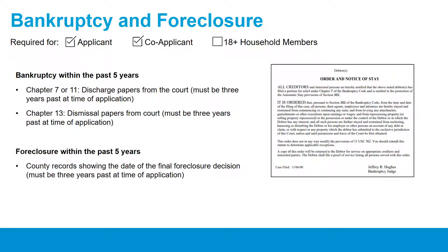Bankruptcy and Foreclosure. This requirement applies to you and your co-applicant — you do not need to supply these for other household members. If you have gone through a bankruptcy or foreclosure in the past 5 years, we need to see documentation of the date these matters were resolved. If either applicant experienced Chapter 7 or 11 bankruptcy, submit discharge papers from court. If either applicant experienced Chapter 13 bankruptcy, submit dismissal papers from court. If you experienced foreclosure, provide county records showing the date of the final foreclosure decision — foreclosure records are available through the Cook County Recorder of Deeds website. In all cases, your application will maintain eligibility if the discharge, dismissal, or decision dates occurred at least 3 years before the date of your application submission.